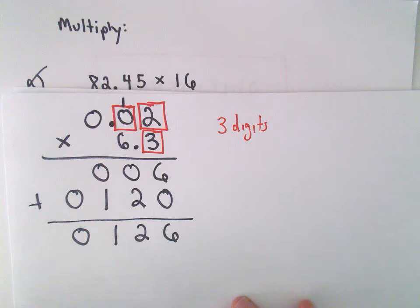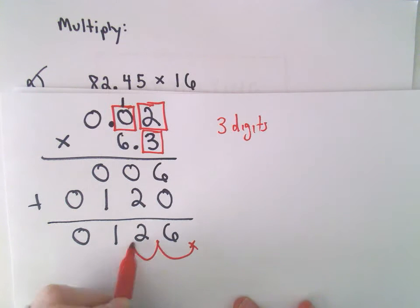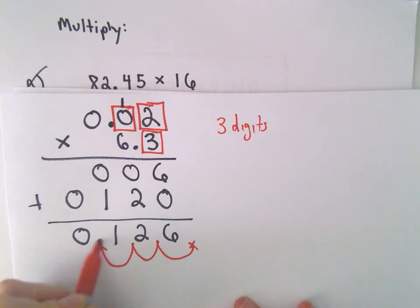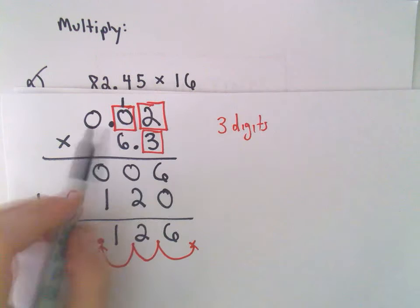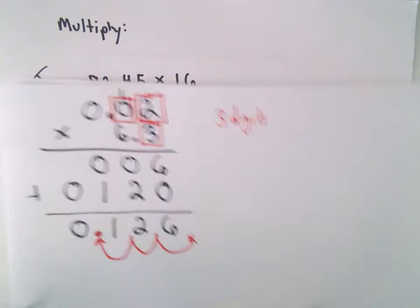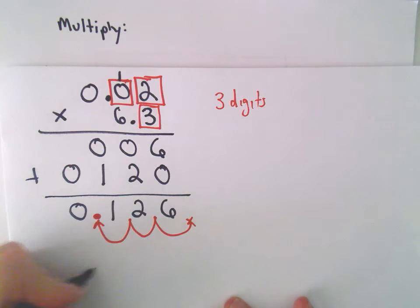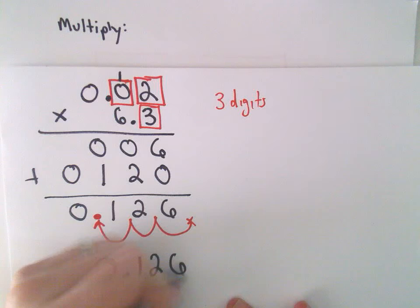And then, again, that tells me how far I move over. So I've got 0, 1, 2, 6. So if I start here and then I move 1, 2, 3 places, that's where the decimal sign will go. So 0.02 times 6.3 will leave us with 0.126.